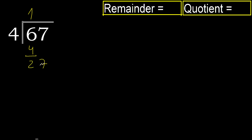Next: 27. 4 multiplied by 7 is 28, which is greater. Multiply by 6 is 24. 27 minus 24 is 3.